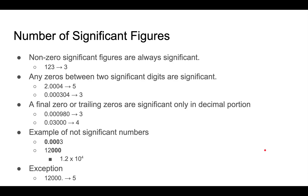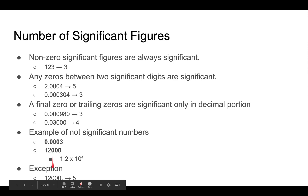There is an exception: if there is a decimal point written after a number like 12,000., then all digits before that decimal point are significant, giving five significant figures instead of two. This can be confusing, which is why scientists use scientific notation to show significant figures clearly. For example, 1.2 × 10⁴ shows two significant figures, while 1.2000 × 10⁴ clearly shows five significant figures, since trailing zeros in the decimal are significant.